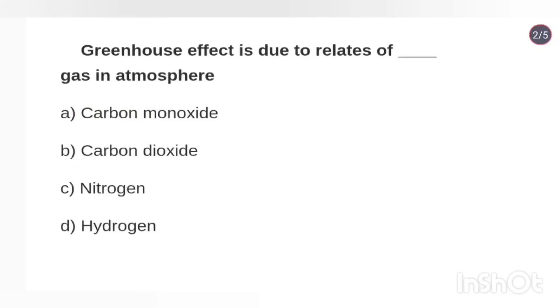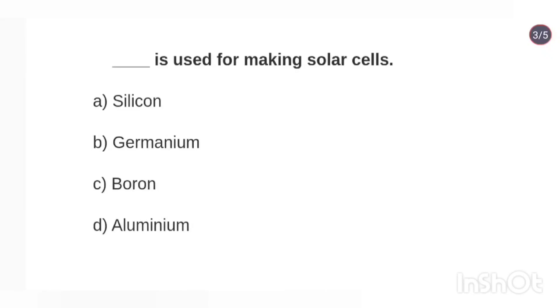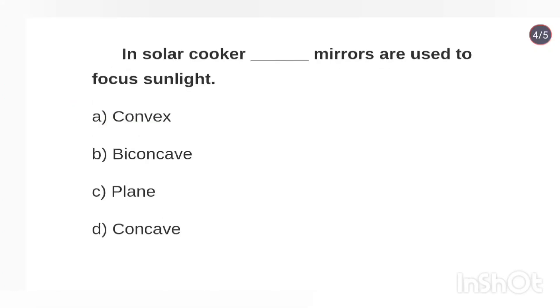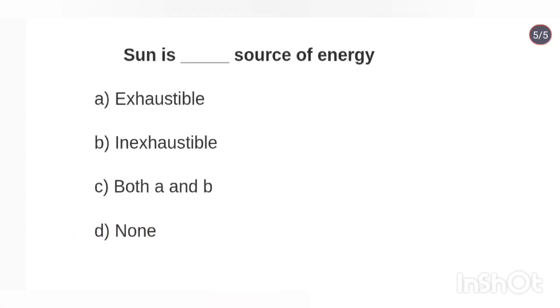In solar cookers, concave mirrors are used to focus sunlight. The sun is an inexhaustible source of energy.